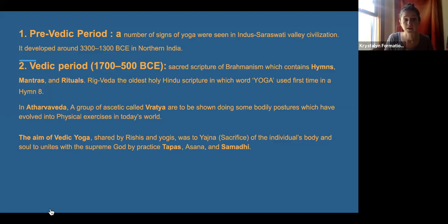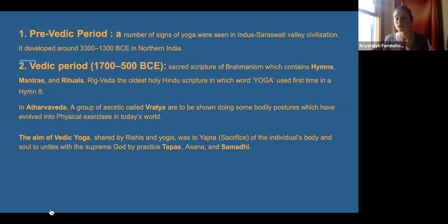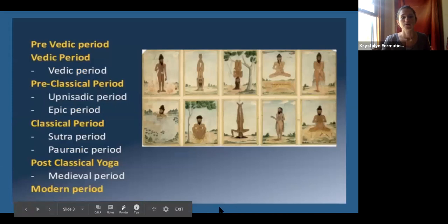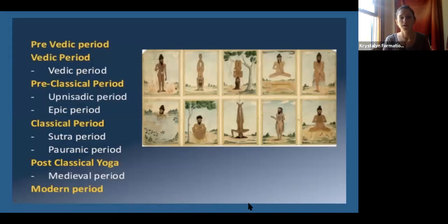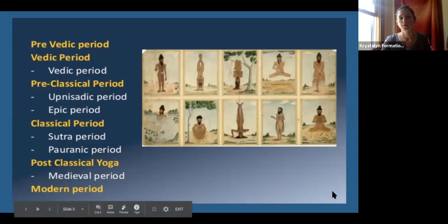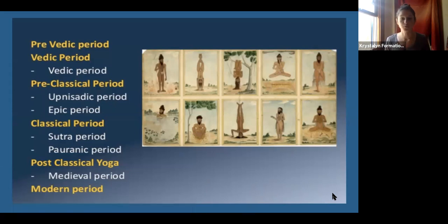In the Vedic period, the aim of Vedic yoga shared by the rishis and the yogis was sacrifice — the individual's body and soul to unite with the Supreme. So it was a practice of tapas, discipline, asanas and postures, and samadhi as a sort of surrender. The aim of Vedic yoga was to denounce the body, let it go, and reach towards the divine by denying the rest of reality. There are no postures specifically mentioned in the Vedas — nothing like an asana.